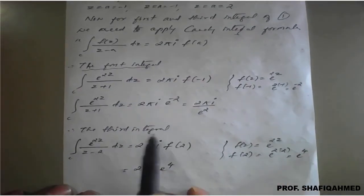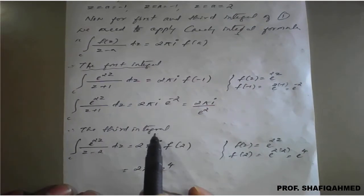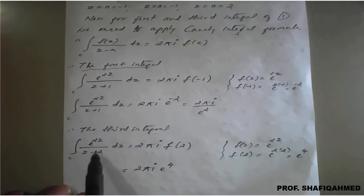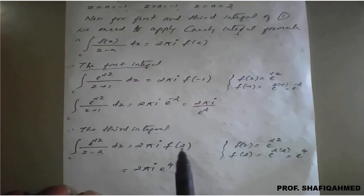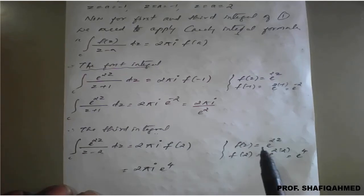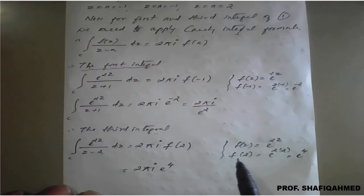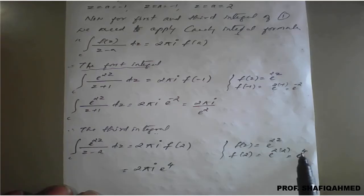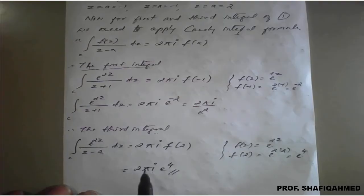Similarly, we simplify the third integral using Cauchy's integral formula. Replace a equal to 2 in f of z. So f of 2 becomes e raised to 2 into 2, that is e raised to 4. So we got the third integral result.